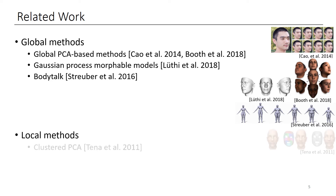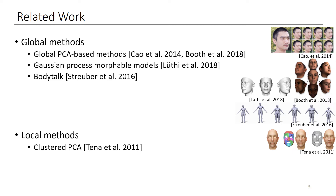Tina and his colleagues proposed a method to create localized cluster PCA models for animation. They select the location of the bases using spectral clustering, geodesic distance, and correlation of vertex displacement, considering variations in expressions. Their method requires a manual step to adjust the boundaries of the segments, making it somewhat similar to ours, where the parts are user-specified.